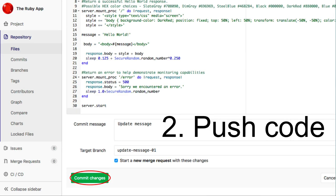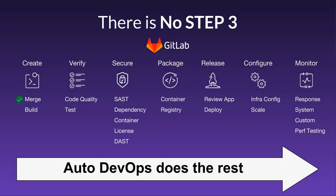Step three... wait a minute, there is no step three. Auto DevOps just detected your language, built your app, tested it, ran security tests, packaged, deployed, and is monitoring your app. You're done!